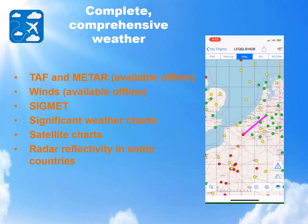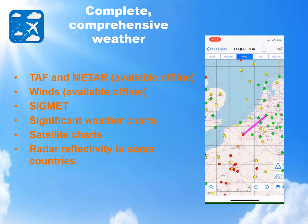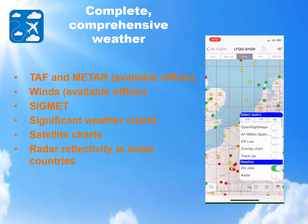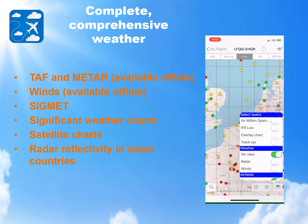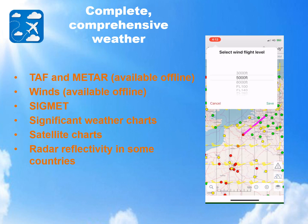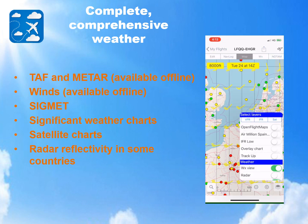When selecting again the aviation map using the map tab, it is possible to view global weather information. Zooming out will display weather dots for all weather airports: green for VFR status, red for IFR, and yellow in between. Using the Layers button at the lower right, it is possible to display wind barbs on top of the map, for which altitude and time may be selected, and also to select the radar reflectivity layer where available in your country.